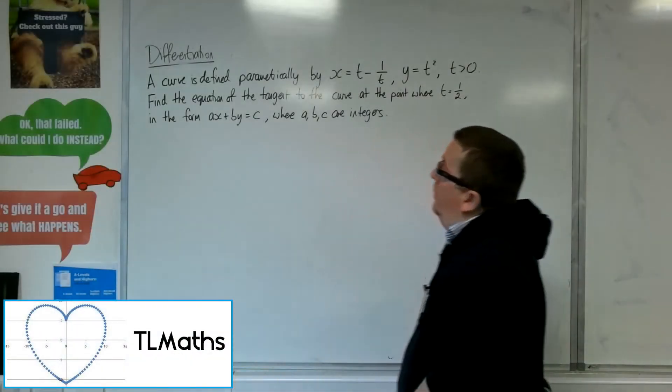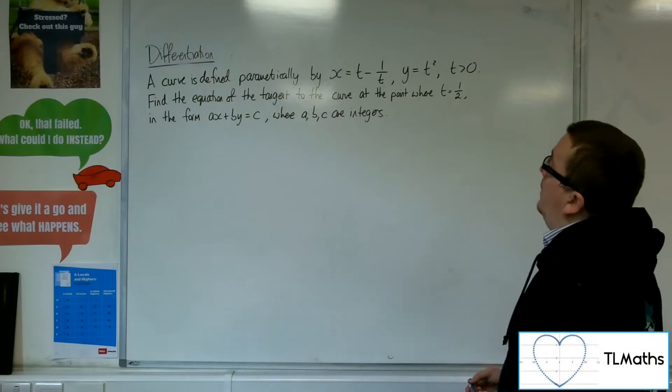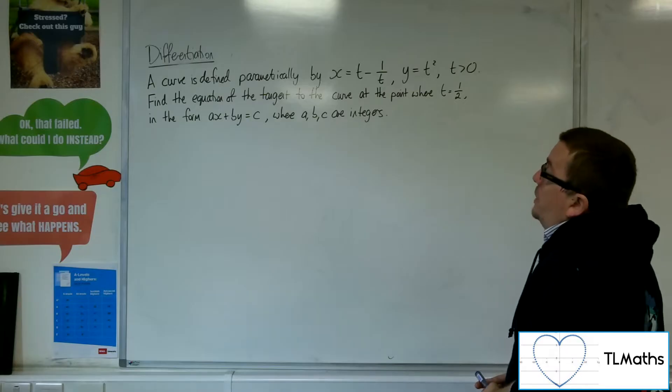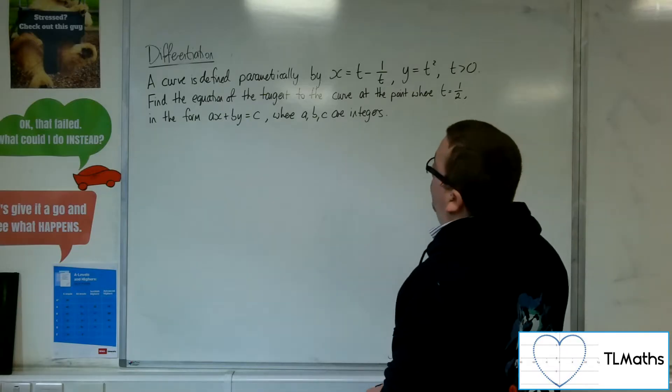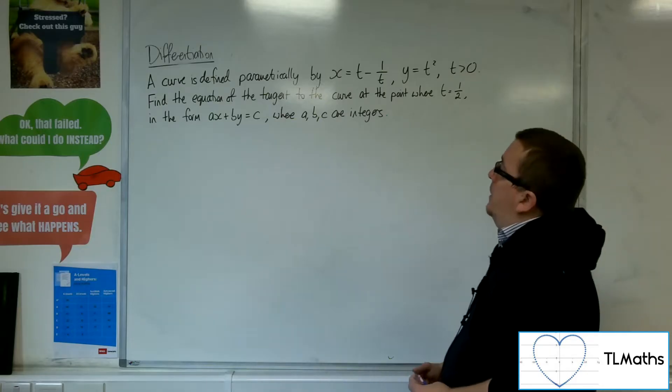Okay, so let's have a look at this problem. A curve is defined parametrically by x equals t minus 1 over t, and y equals t squared, where t is positive. Find the equation of the tangent to the curve at the point where t equals 1 half, in the form ax plus by equals c, where a, b, c are integers.